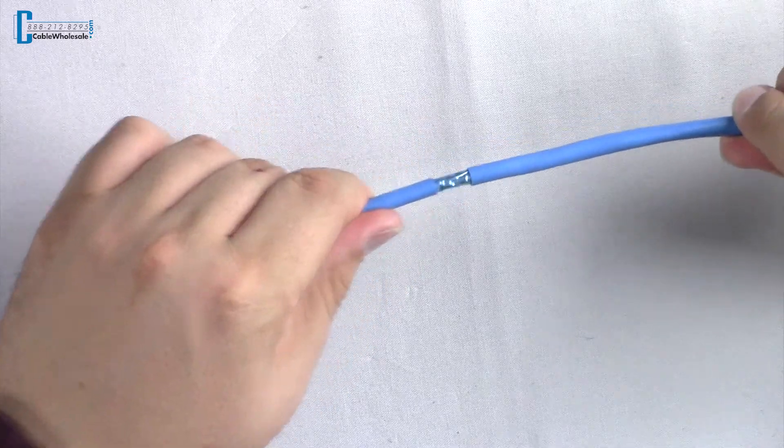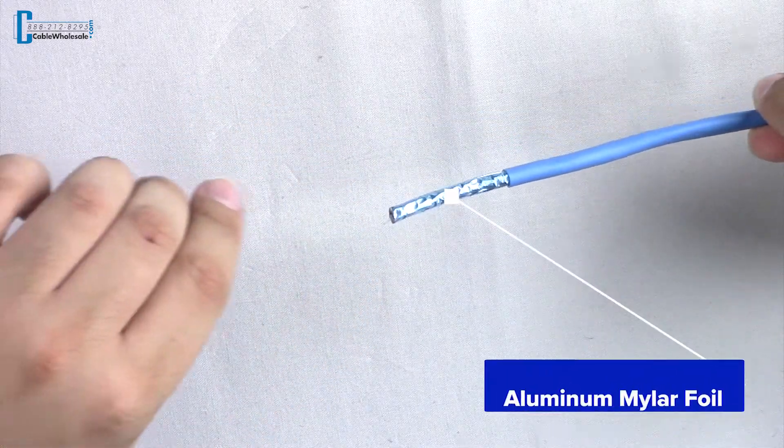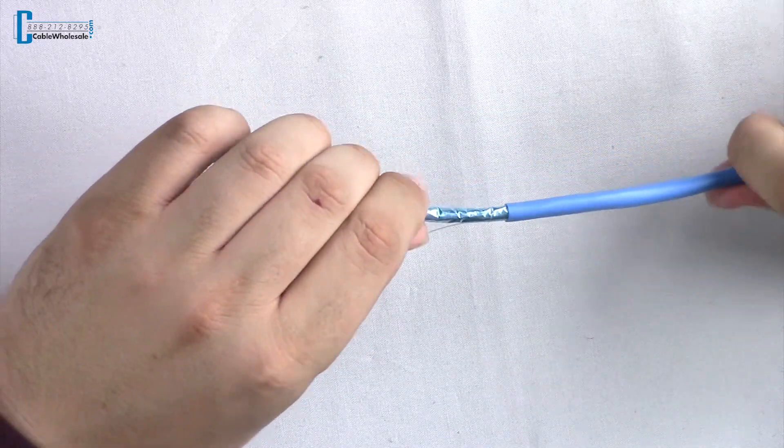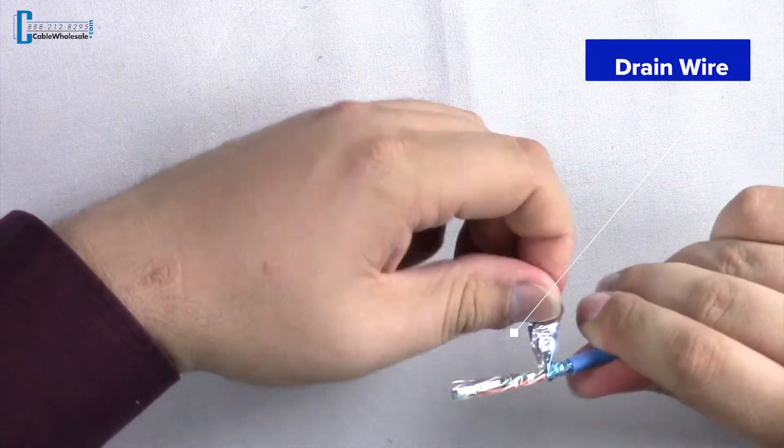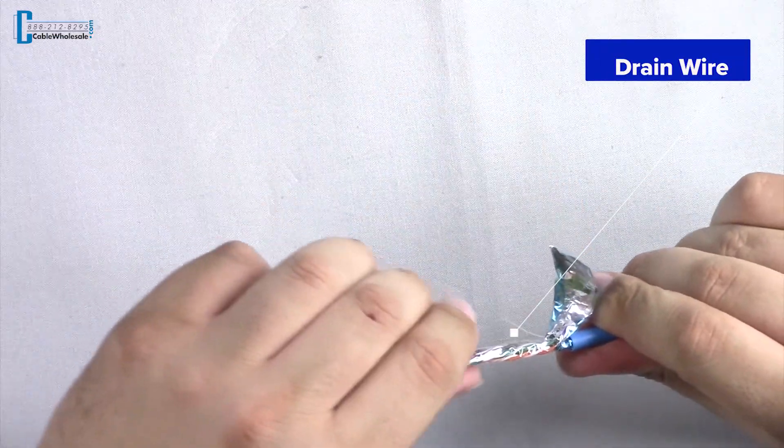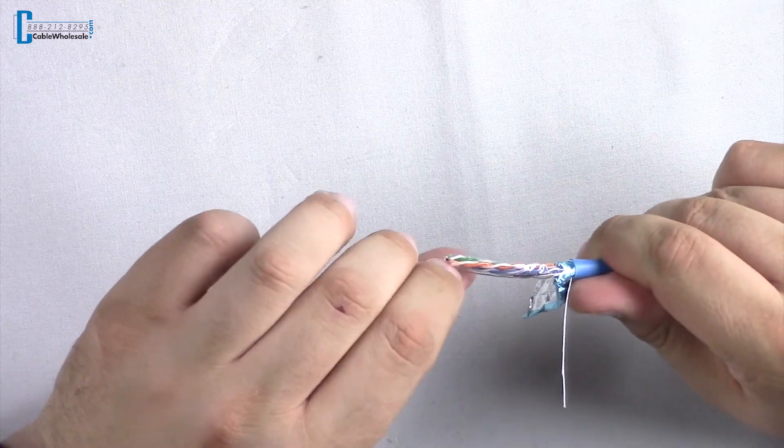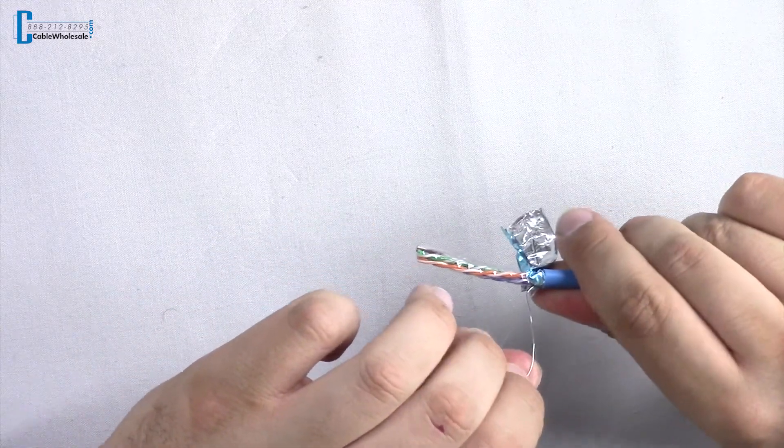Well Rick, FTP shielded ethernet cables feature an aluminum mylar foil shield under the outer jacket that surrounds all four pairs. It also has a drain wire that must be grounded to drain off the currents created by electromagnetic interference and radio frequency interference, EMI and RFI respectively.